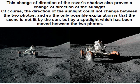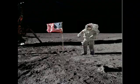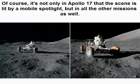This change of direction of the rover's shadow also proves a change of direction of the sunlight. Of course, the direction of the sunlight could not change between the two photos, and so the only possible explanation is that the scene is not lit by the sun, but by a spotlight which has been moved between the two photos. It's not only in Apollo 17 that the scene is lit by a mobile spotlight, but in all the other missions as well.